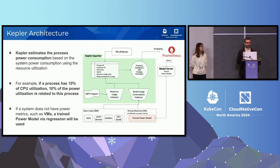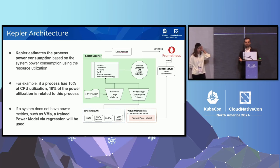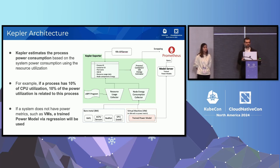How does Kepler work for those not familiar with it? We first collect information about the process — for example, the resource utilization — and we also collect information about the power consumption of the machine. If it's a bare metal node, we can collect the power consumption from the hardware sensors. If it's not bare metal but a virtual machine, we need to use trained power models to get the power consumption of different components.